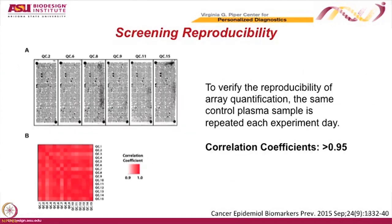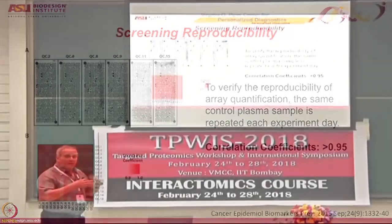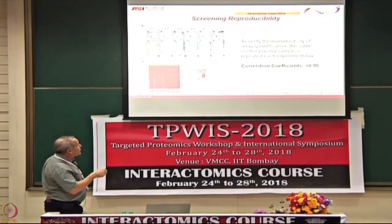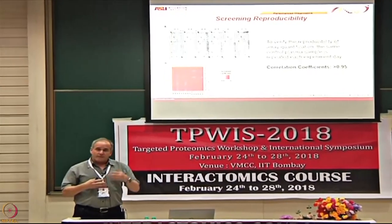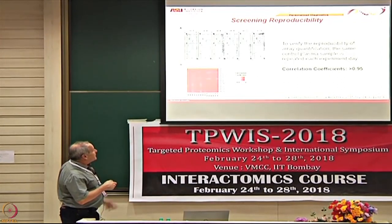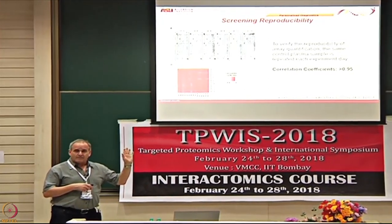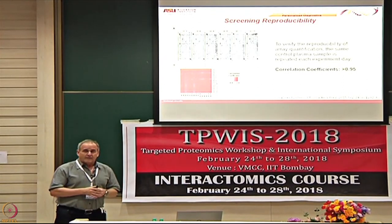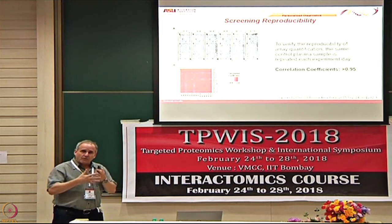We ran the control sample every day of the experiment and then plotted every day versus every other day using a heat map, where bone white represents 90% correlation and solid red represents 100%. No matter which two days we compare, nothing gets even close to white — almost everything is medium pink to red. No matter what day we compare to any other, it's better than 96% correlation. That gives you confidence that when you use this platform you'll get the same answer every time.